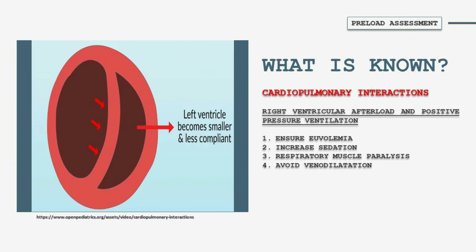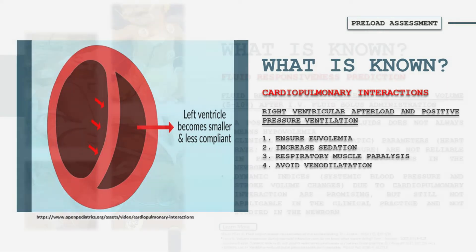Another important thing to consider during mechanical ventilation of the newborn infant is the existing interdependence between the right and left ventricle. This may result in a further decrease of left ventricular preload and, as a consequence, of cardiac output. When the newborn has excessive spontaneous breath efforts, because of the right ventricular bulging into the left one, in these cases it is important to obtain greater patient sedation and respiratory muscle paralysis.